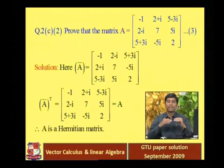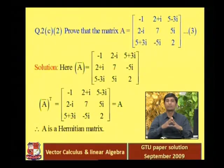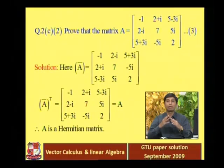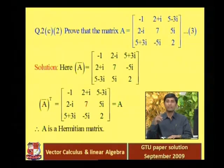We find the conjugate matrix A-bar. The conjugate of a complex number a + ib is a minus ib — we change the sign of the imaginary part. So the conjugate matrix A-bar is formed by replacing every complex number in the matrix with its complex conjugate, keeping real numbers unchanged. Then we take the transpose.